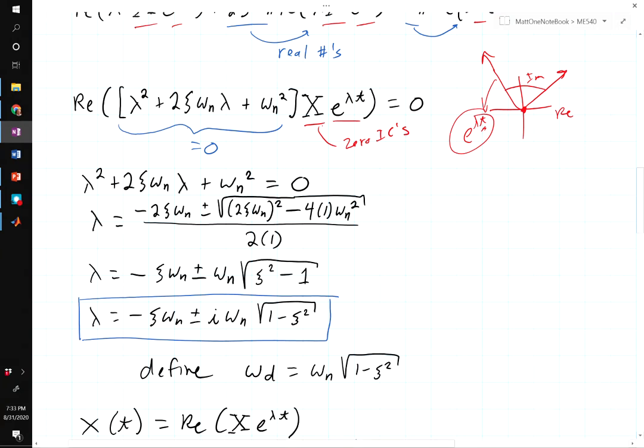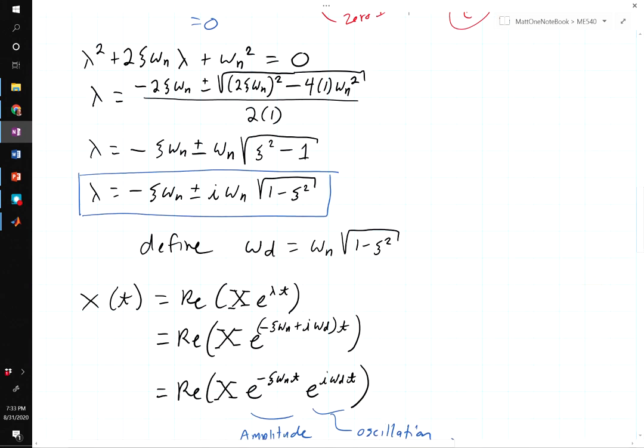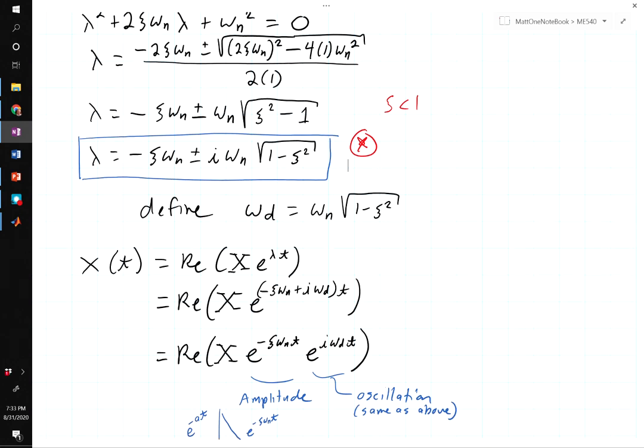That tells us that this quantity here has to be zero. For x to be zero would mean we'd have zero initial conditions, and that's just the trivial solution. So the solution is just the solution to this polynomial. We plug that into the quadratic formula, we simplify, and we end up with this. Hopefully in your vibrations class you learned that ζ for an underdamped system is usually less than one. It's actually usually pretty small.